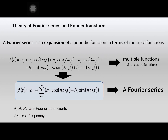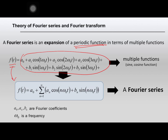Before we learn the equation of the Fourier transform, let's start with the Fourier series. If we have a periodic function or periodic signal, instead of writing this function in the long form, you can write it using Fourier series theory. The coefficients a0, aN, and bN are the Fourier coefficients, which you can see the equations for in the lab sheet.